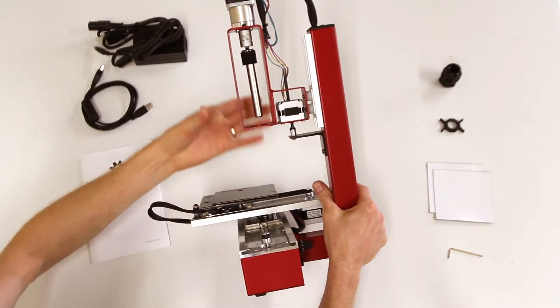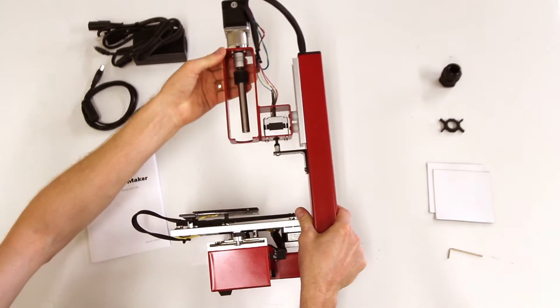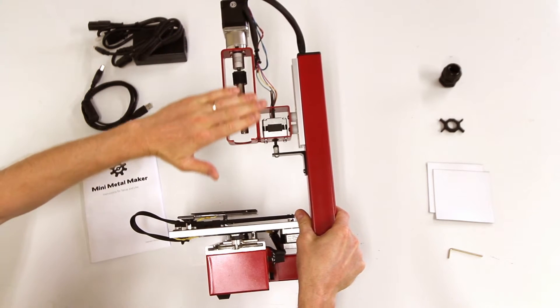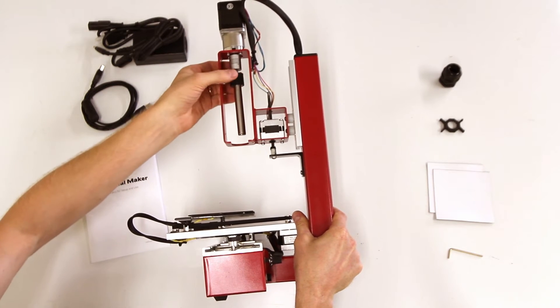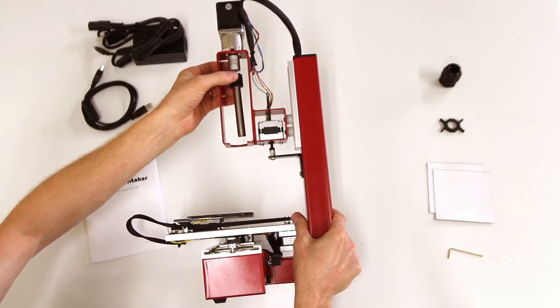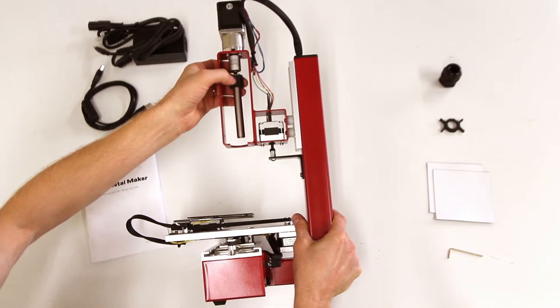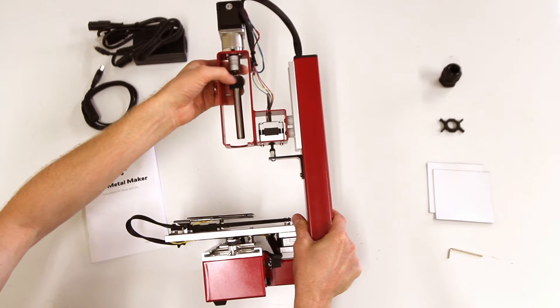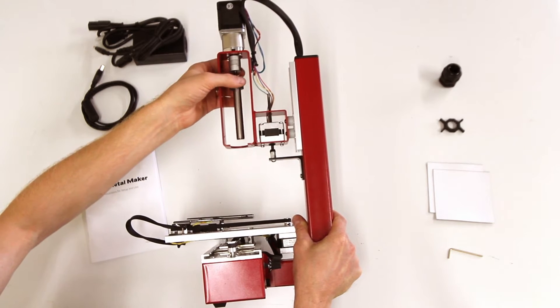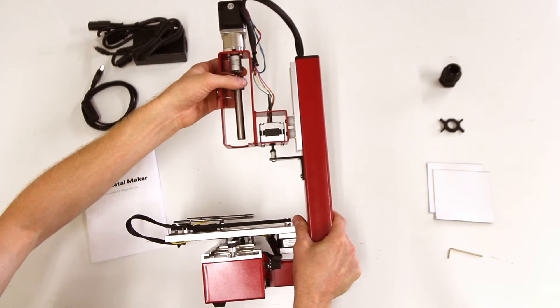When you look at the Mini Metal Maker, you can see that the spot where the cartridge of clay goes is up here in this extruder section. And there is an extruder piston. If you notice, there's a little knurled knob on the top that will let you turn this by hand to bring it up or put it down when you're getting set up for a print.